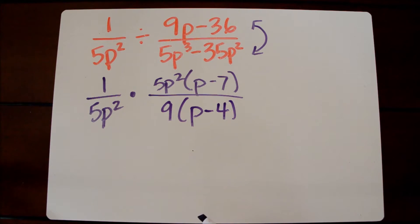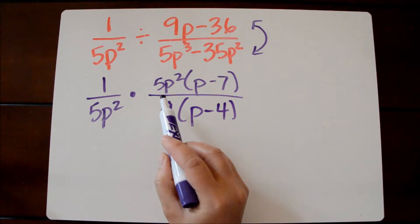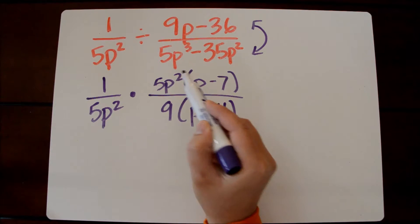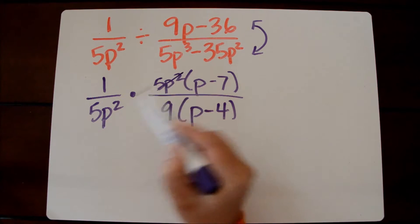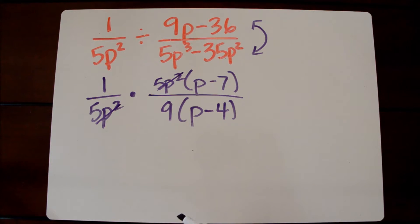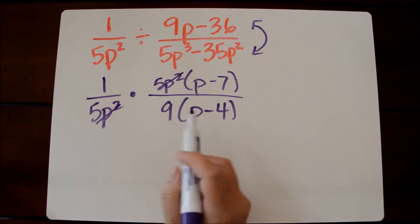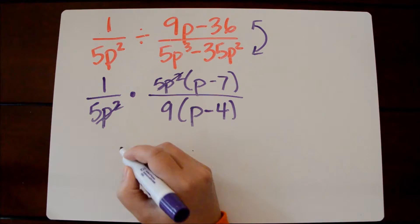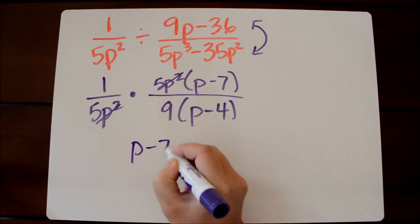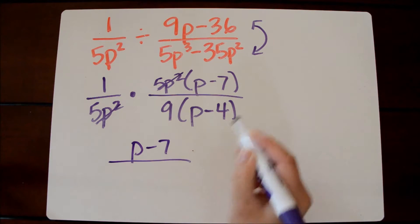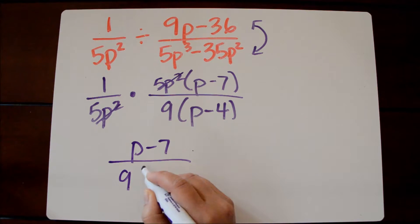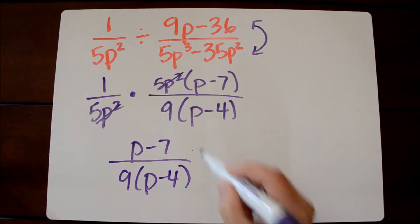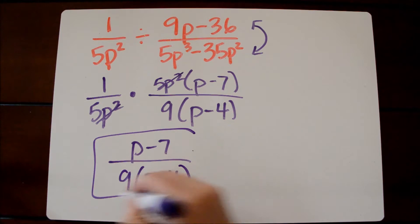I'm going to check to see if anything divided by itself can 1 out, and we have 5p squared and 5p squared. After that, we just multiply straight across. So 1 times p minus 7 is still p minus 7, and then in the denominator, I'm left with 9 times p minus 4. And this is our simplified expression.